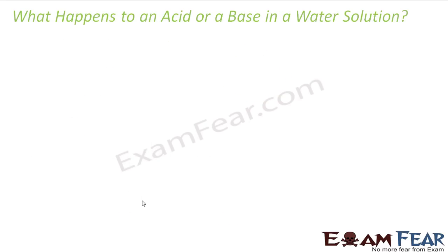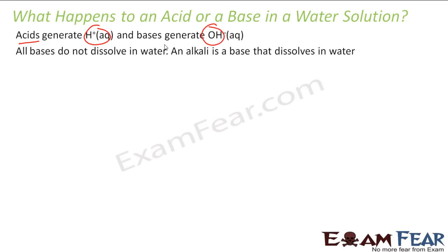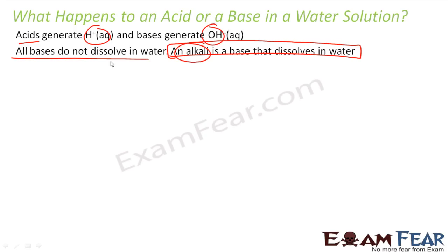Now the question is: what happens to an acid or base in a water solution? Acid generates H⁺ ions and base generates OH⁻ ions in the water solution. Please note: all bases will not dissolve in water. Alkali is the base that dissolves in water — only alkali dissolves in water. So alkali is the subset of base that dissolves in water.